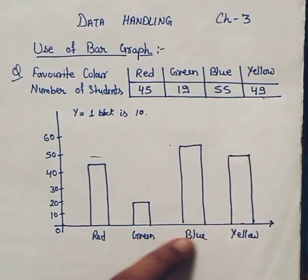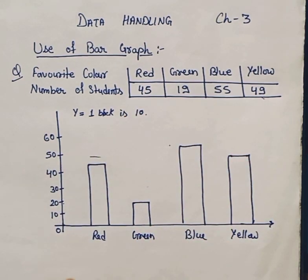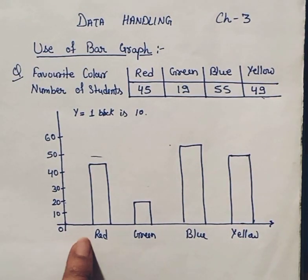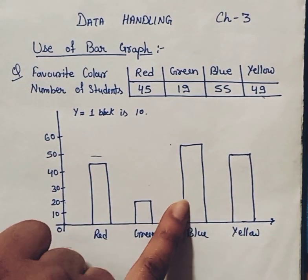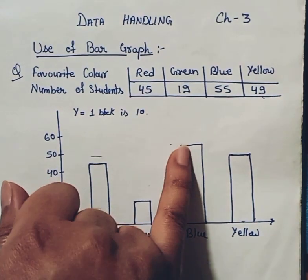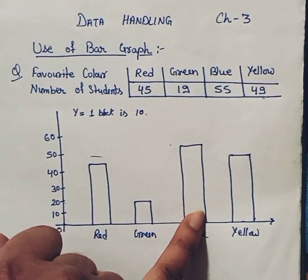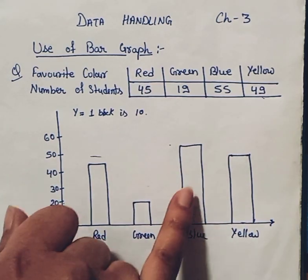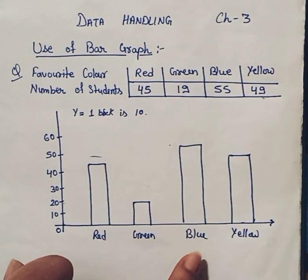Using this method, we can conveniently represent larger data in a simple way. We can also answer questions from the graph. For example, if I ask which color is liked by most students, you can check the bar graph and see that 55 is the highest number — that pillar or box is the largest or tallest one, meaning that color is liked by the most students.